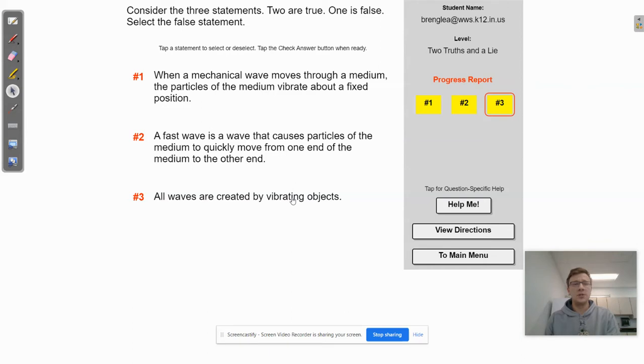So, okay, so number one says when a mechanical wave moves through a medium, the particles of the medium vibrate about a fixed position. Number two says a fast wave is a wave that causes particles of the medium to quickly move from one end of the medium to the other end. And number three says all waves are created by vibrating objects. So hopefully the first one that you identify 100% as true is number three, because all waves are caused by some vibration. So you might be trying to figure out the difference between one and two and which one is true and which one is false.